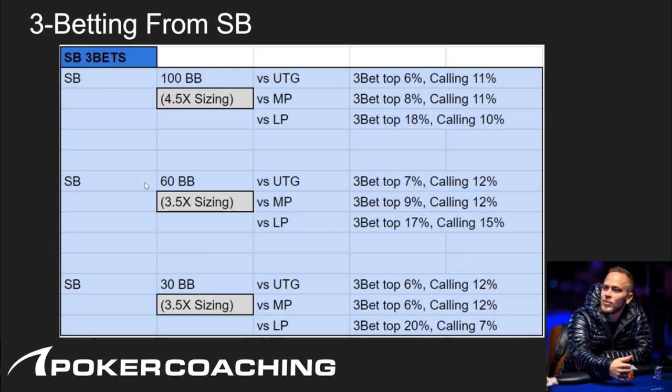At 60 big blinds using 3.5x sizing from the small blind: versus UTG it's 7% three-bet calling 12%, versus MP it's 9%, versus LP it's 17% calling 15%. The shorter stack size gets to VPIP more than the deeper stack — 32% VPIP versus a 60 big blind stack compared to 28% versus a 100 big blind stack.